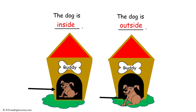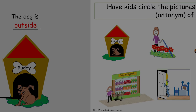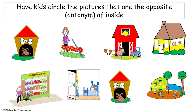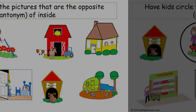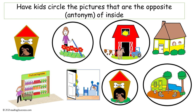Now have kids look at the second example. Inside is the opposite of outside. The dog is inside; then the dog is outside. Now have kids circle the pictures that are the opposite, the antonym of inside — so kids are looking for everything that is outside. The pictures that show something outside are the girl watering the flowers, the farm, the dog outside the doghouse, and the people camping.